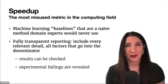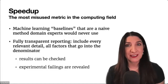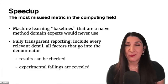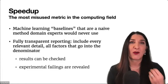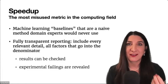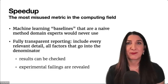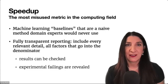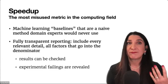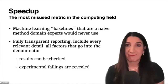A good baseline should be the most popular or best expertly used method. How does this relate to reproducibility? If you do fully transparent reporting, you would include every relevant detail of the experiments, including all the factors that go into the denominator of any speedup metric. This is level zero of reproducibility: presenting the data and analysis with sufficient transparency and clarity that the results can be checked. When doing so, failings in the experimental design are also revealed. Do the data support the claims? That is the question.